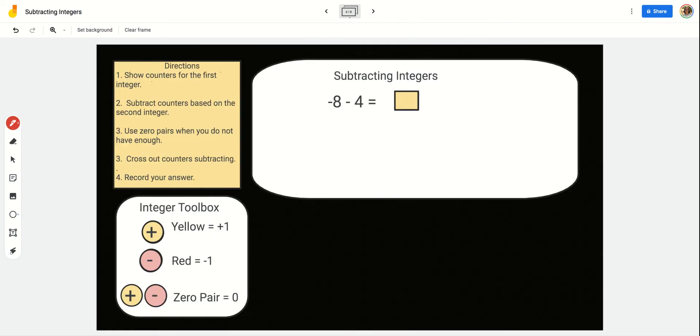So, let's continue. This time, we're going to start with negative 8. So, I'm going to drag over negative 8 counters. 3, 4, 5, 6, 7, 8. And, I'm going to take away 4.